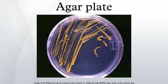Individual microorganisms placed on the plate will grow into individual colonies, each a clone genetically identical to the individual ancestor organism. Thus, the plate can be used either to estimate the concentration of organisms in a liquid culture or a suitable dilution of that culture using a colony counter, or to generate genetically pure cultures from a mixed culture using a technique known as streaking.